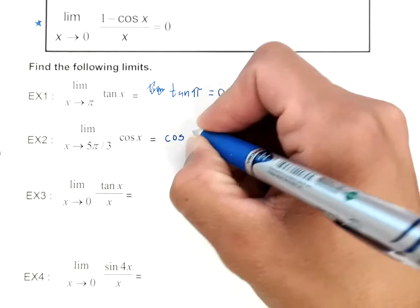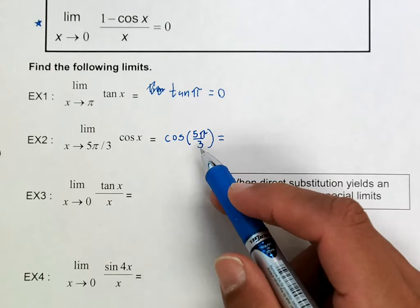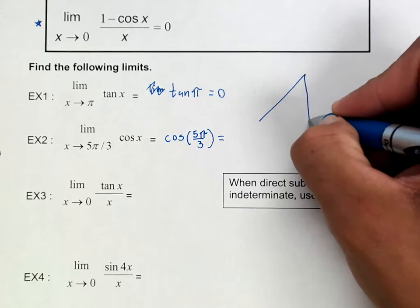Now on the next one, same thing, we're going to start off by plugging in. So we have cosine of 5π over 3. The first thing to remember is that 5π over 3 is in quadrant 4, so that means that cosine is going to be positive.